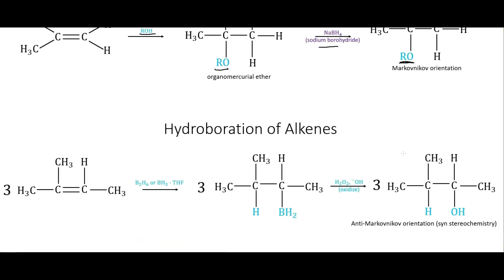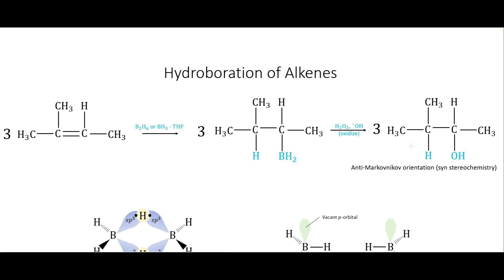We can also do the hydroboration of alkenes — this also puts an alcohol group on, but now we're forming the anti-Markovnikov product. For each borane we use, we'll make three additions. Borane is BH3 — boron with three hydrogens. We have a tertiary carbon and a secondary carbon, and what we find is that the hydroxyl group goes on the secondary carbon rather than the tertiary carbon — so we're forming the anti-Markovnikov orientation.